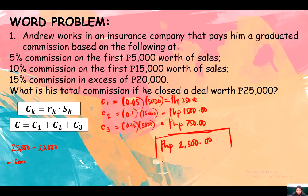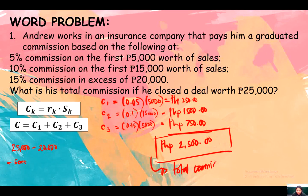So 2,500 pesos is his total commission at the insurance company if he closes a deal worth 25,000 pesos.